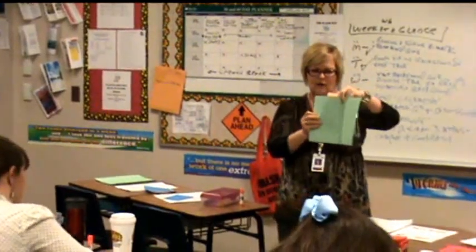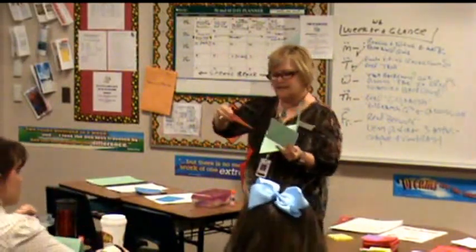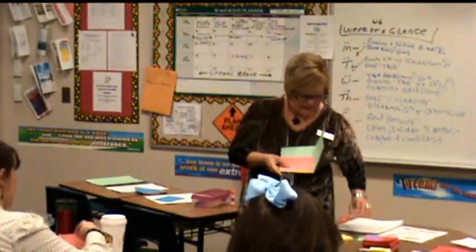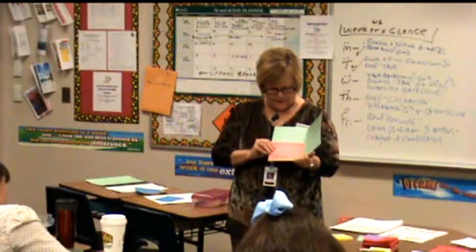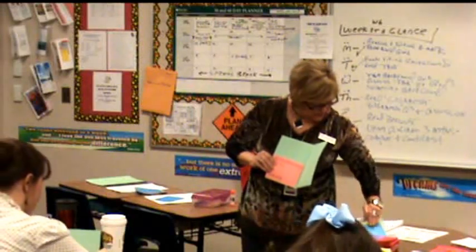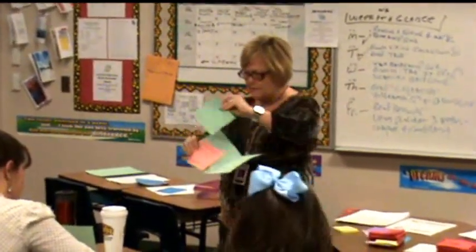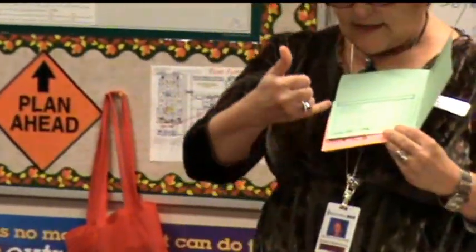Fold it in half and open it up. I always start with the last tab — this time it's going to be 'assess.' Put a strip of glue right here and glue that assess tab at the bottom. Then the next one in reverse order is 'share.' Put a glue strip along the back and layer it. This is called a layered foldable — you're layering the tabs so you can see 'assess' and 'share.'